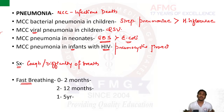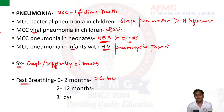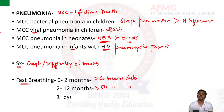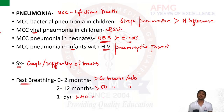The cutoffs for tachypnea in children are: for 0–2 months, more than 60 breaths per minute; for 2–12 months, more than 50 breaths per minute; and for 1–5 years, more than 40 breaths per minute is considered tachypnea.